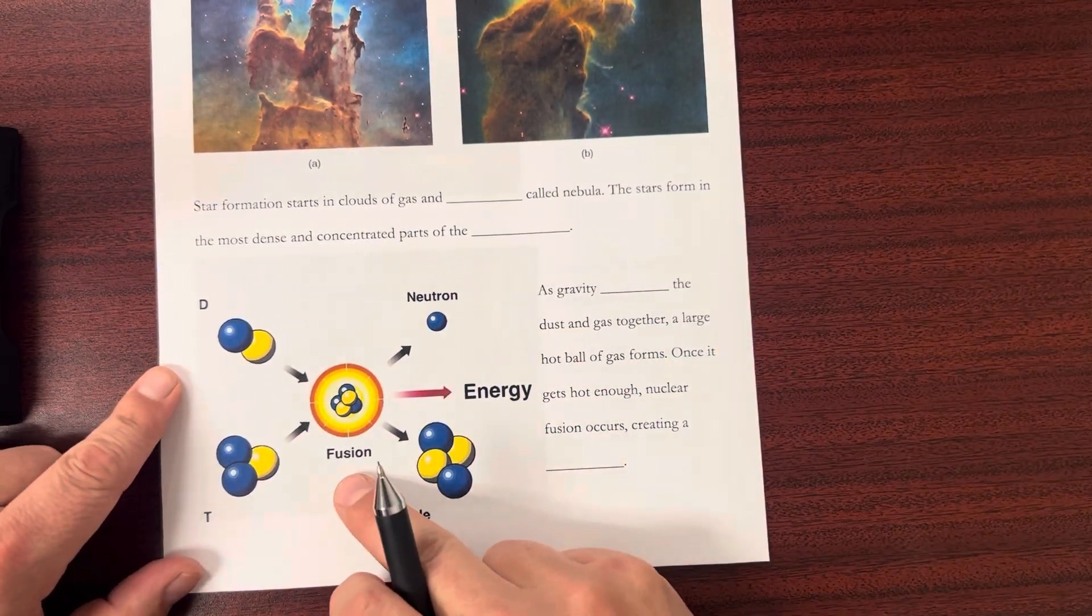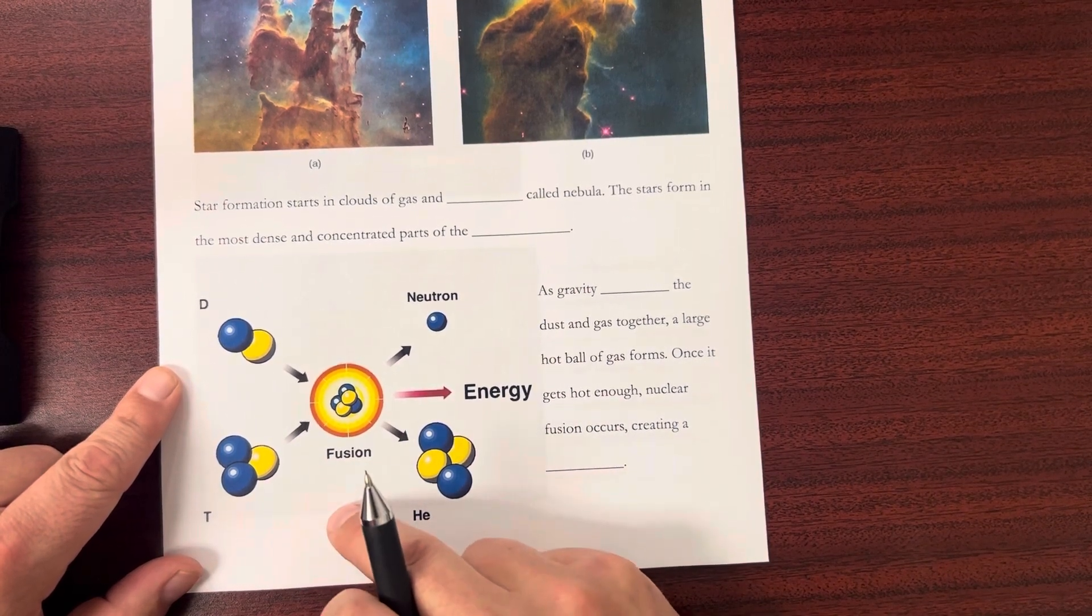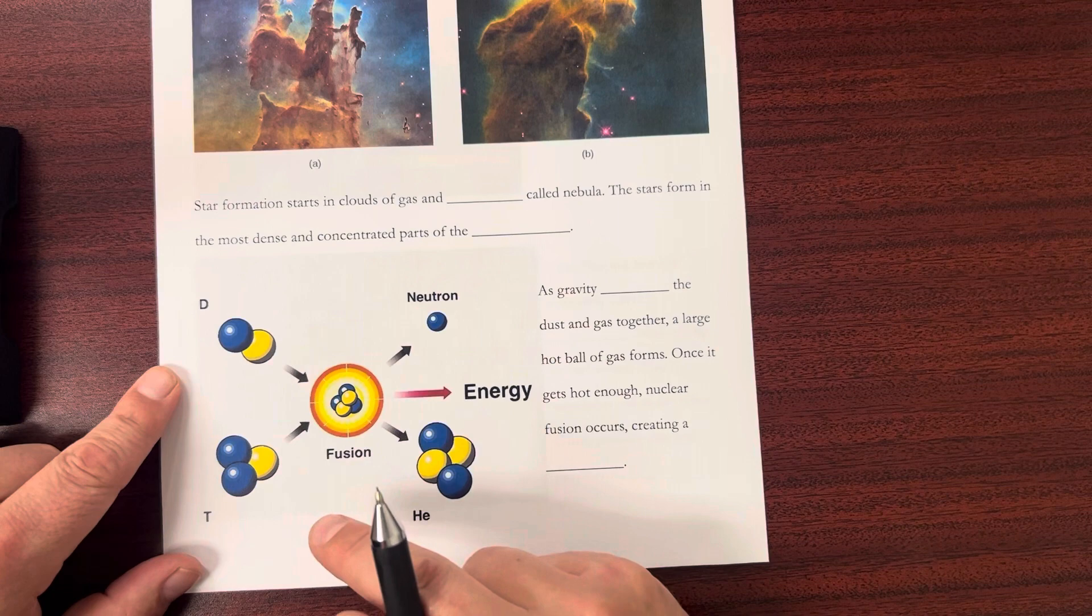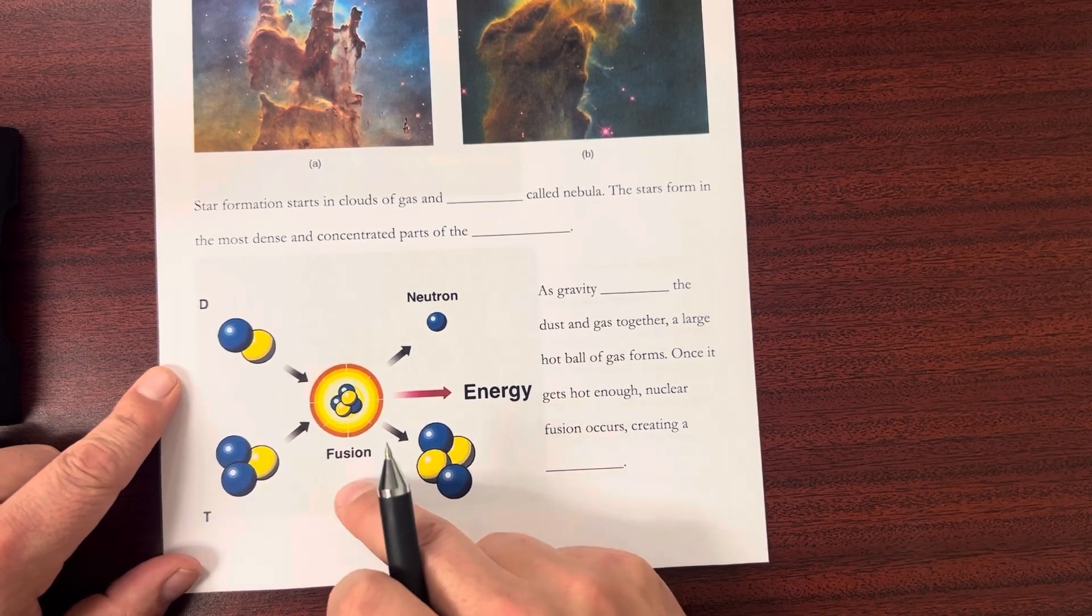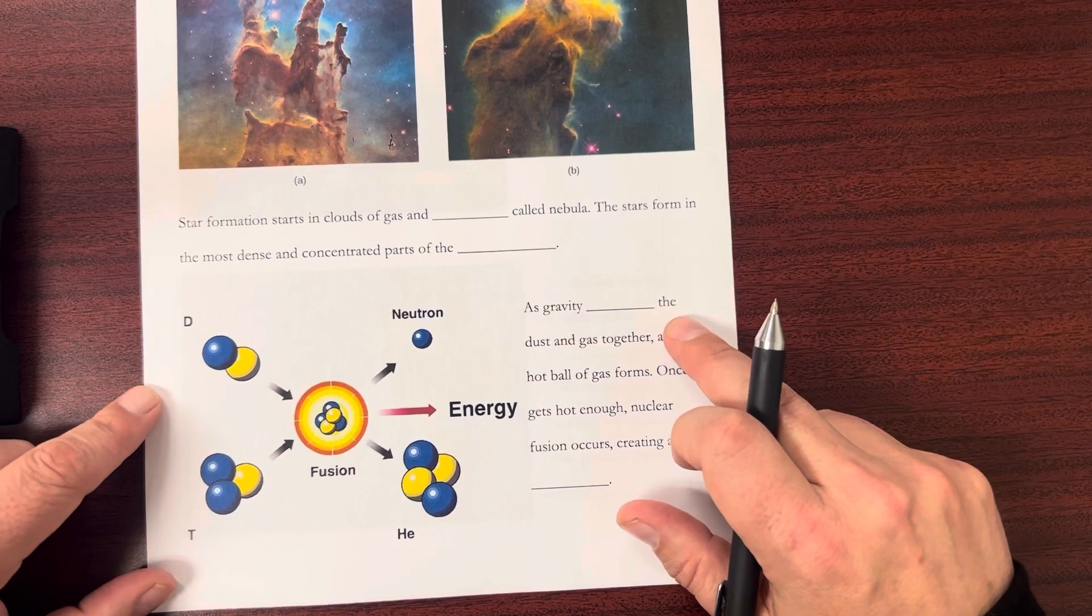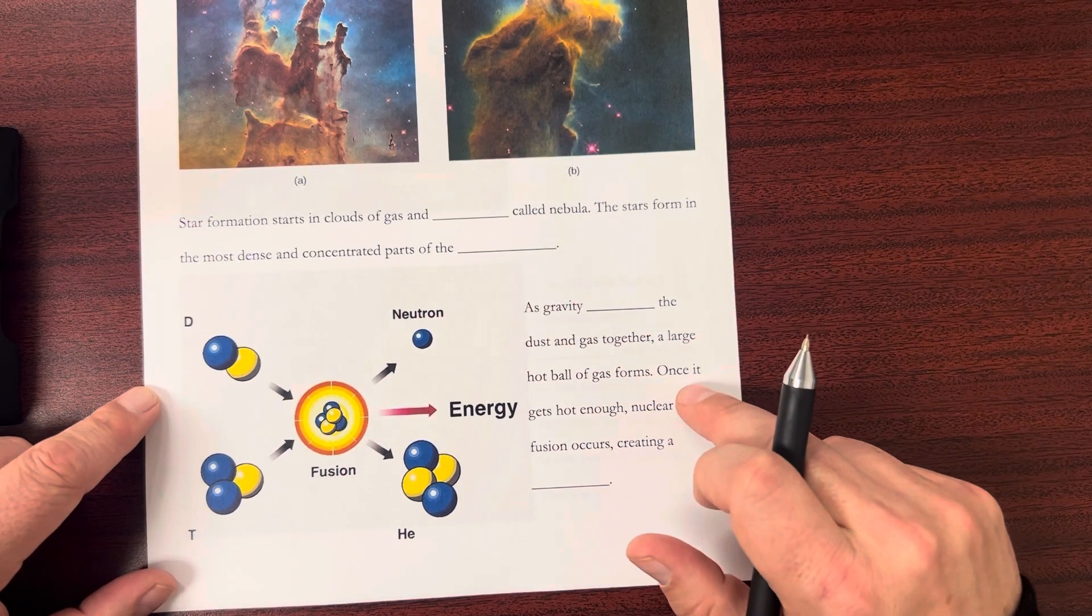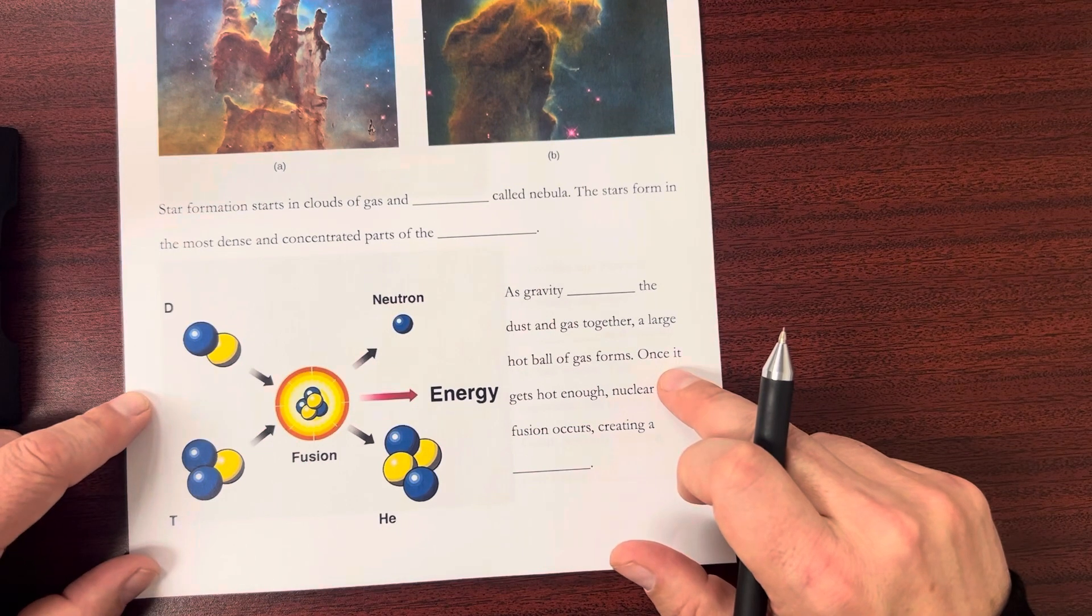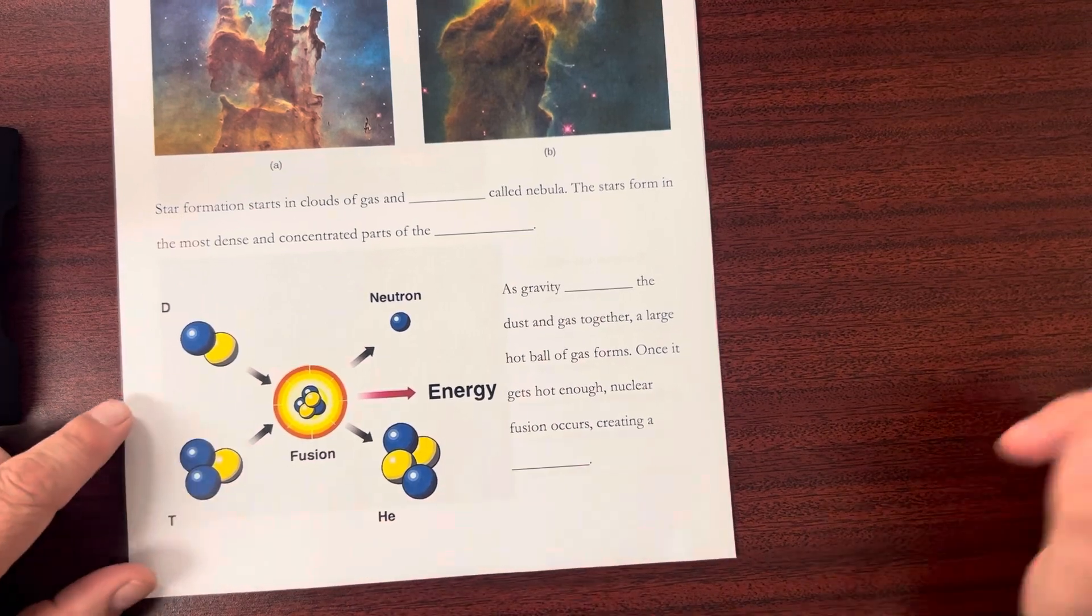Here it's showing nuclear fusion because that's what's actually going to start a star. It's not a star until it has started fusion in its core. As gravity pulls the dust and gas together, a large hot ball of gas forms. Once it gets hot enough, nuclear fusion occurs, creating a star.